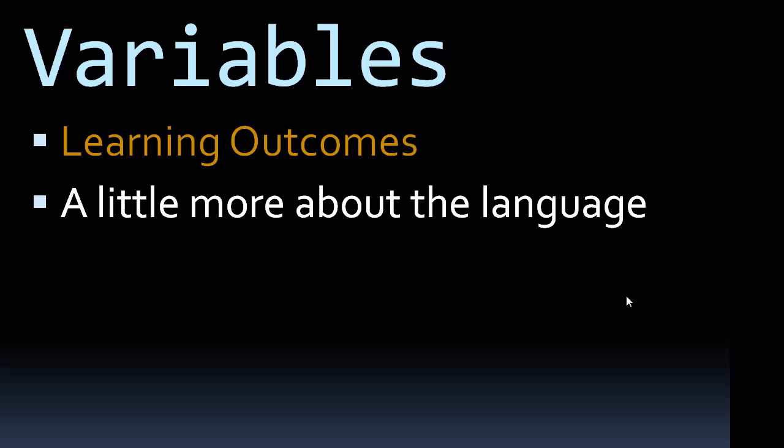C-Sharp is also object-oriented. Everything in C-Sharp is an object. Another thing about the language is there are no global functions or variables — unlike PHP which has super variables or global variables. In C-Sharp, everything is in classes.